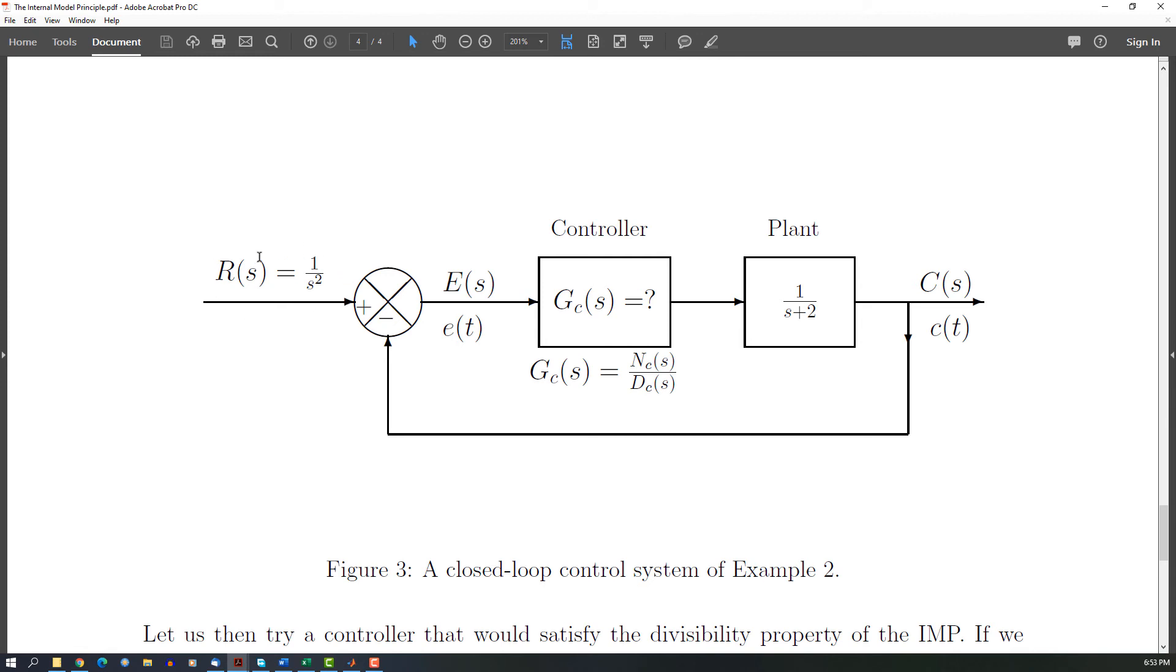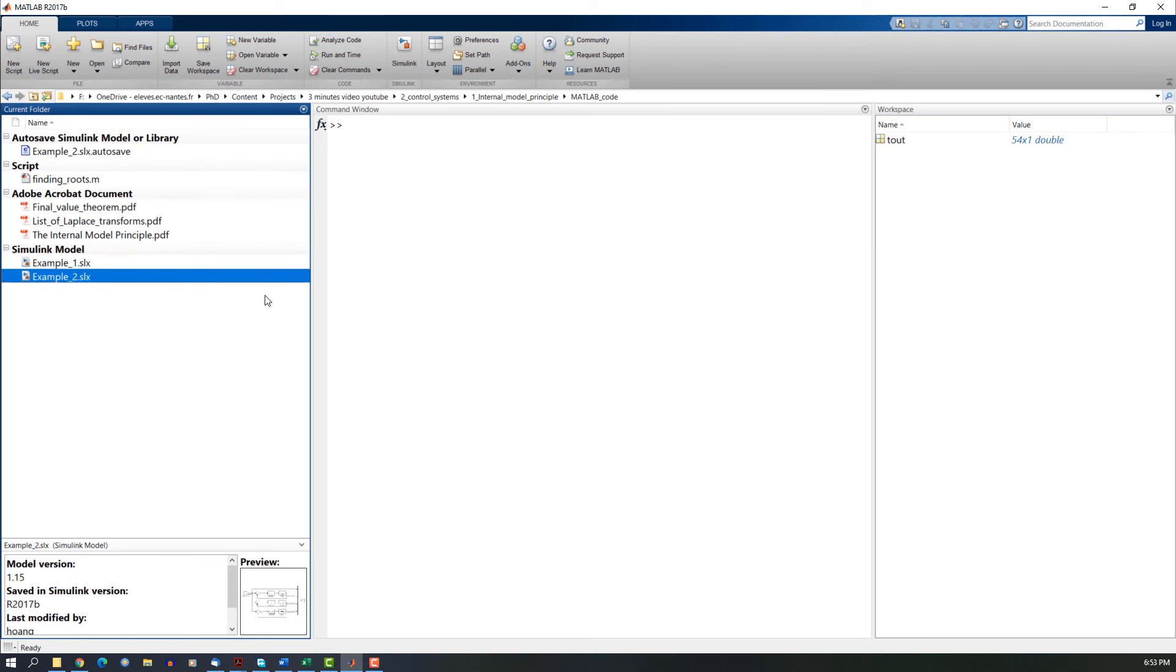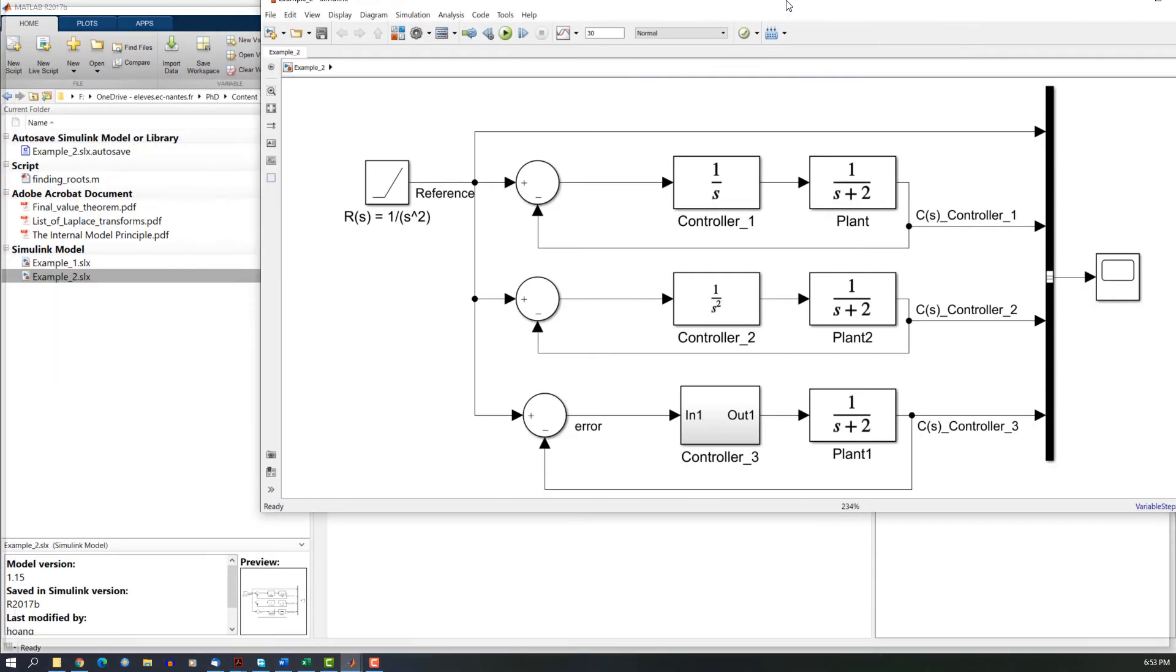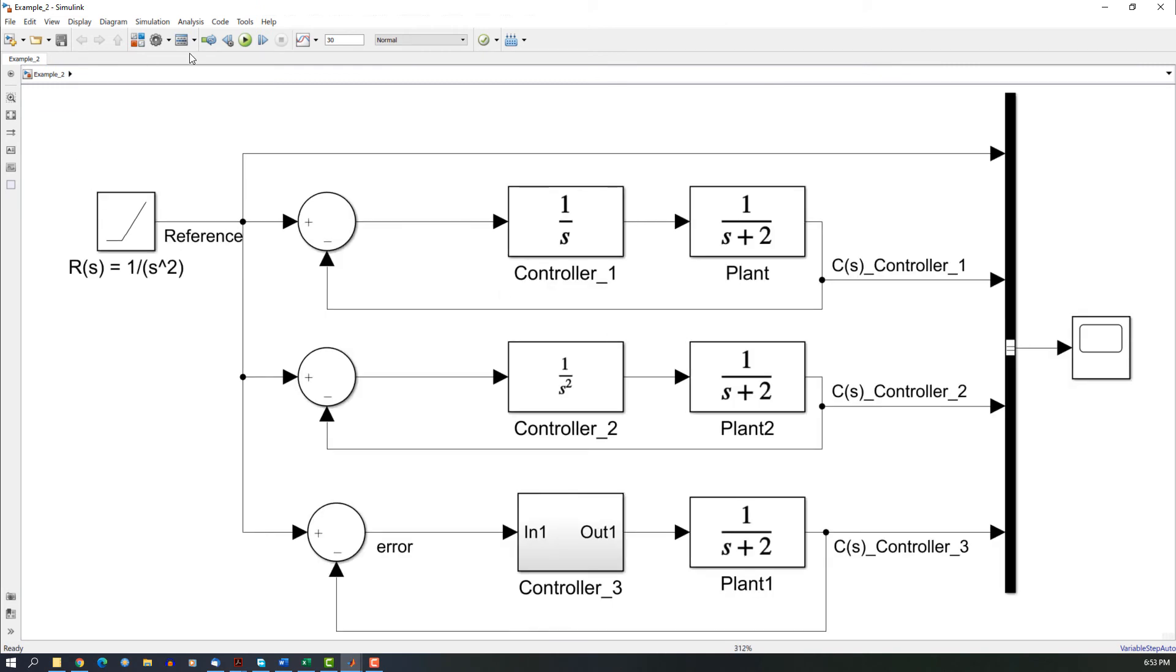Go to the second example. Actually, we track now a ramp. Here the controller is the same, but the reference now is a ramp. This is the first controller, which is the same as in the first example. The controller would contain all the poles of the reference, but let the system become unstable. And the last one, this is what we did.